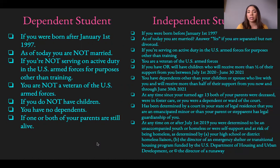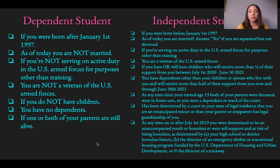A dependent student is one who is still under the responsibility of parents or a legal guardian. You are considered dependent if you were born after January 1st, 1997; you are not currently married; you are not serving on active duty in the U.S. Armed Forces for purposes other than training; you are not a veteran; you have no children or dependents; or if one or both of your parents are still alive — meaning someone is still claiming you on their taxes.